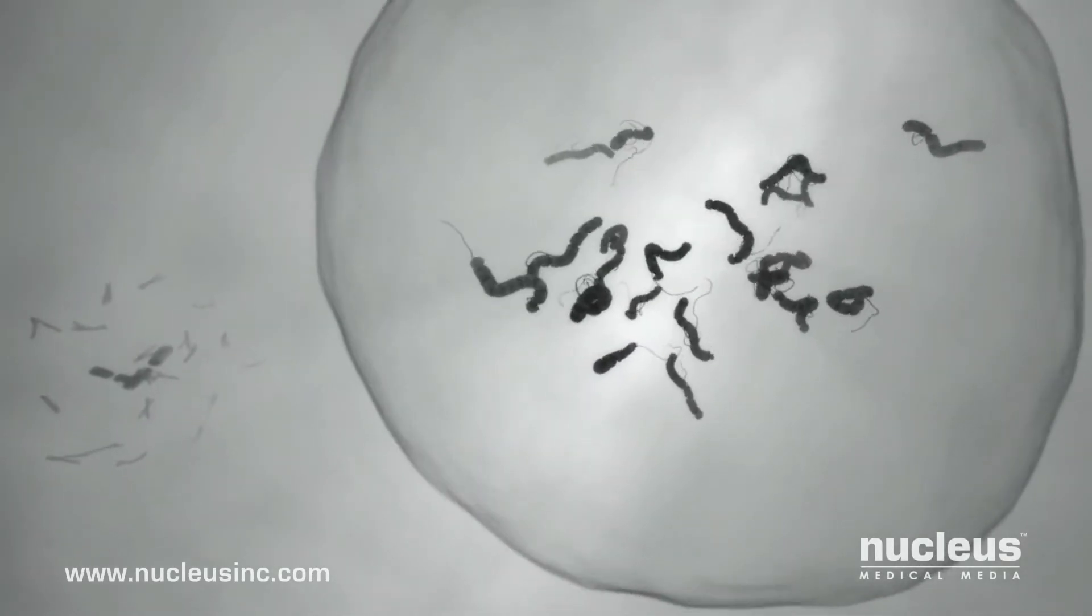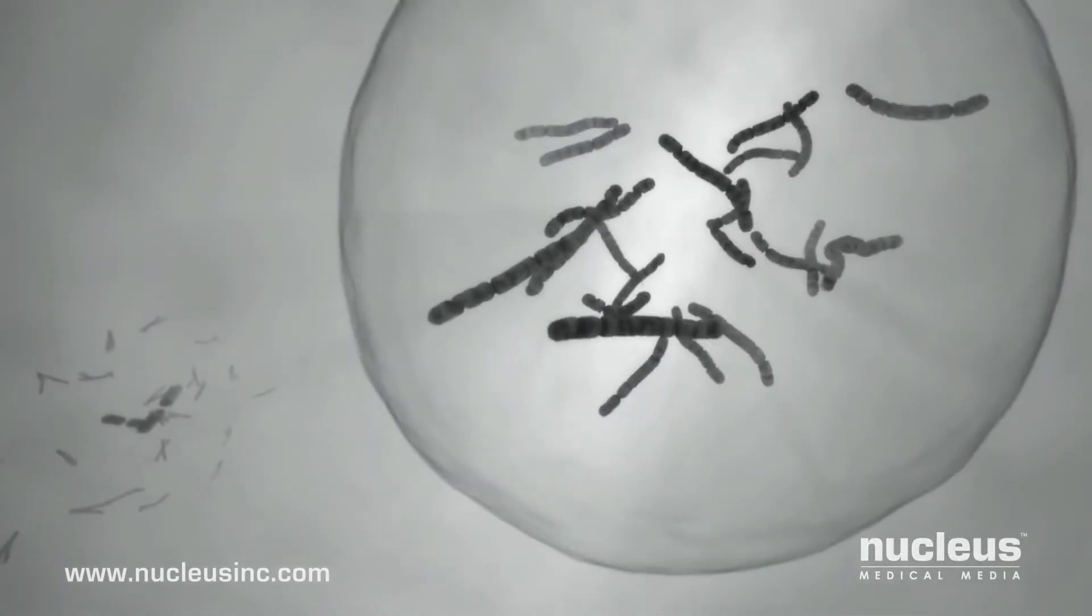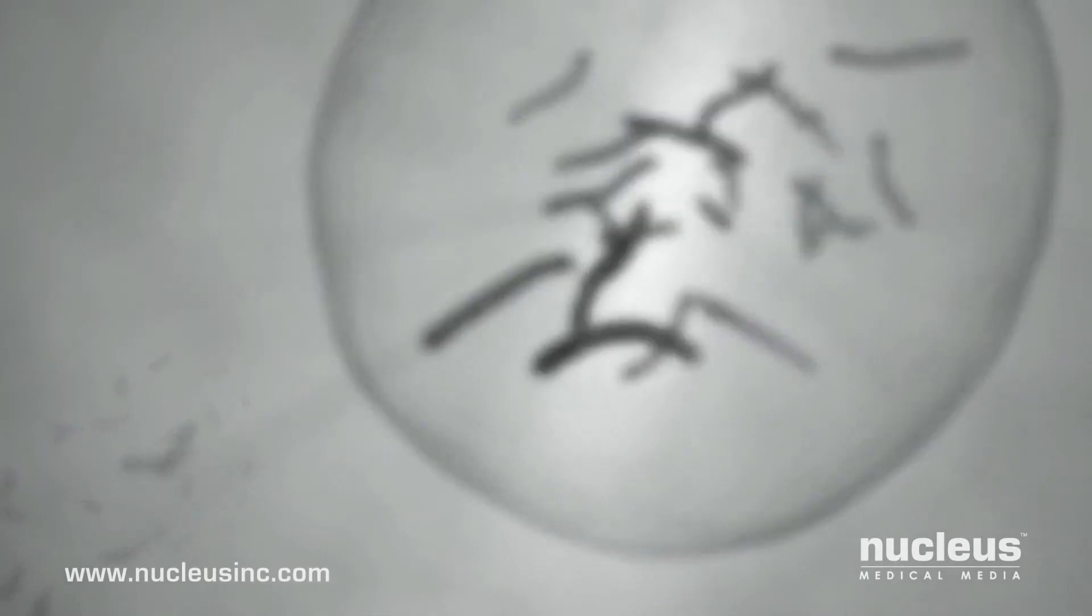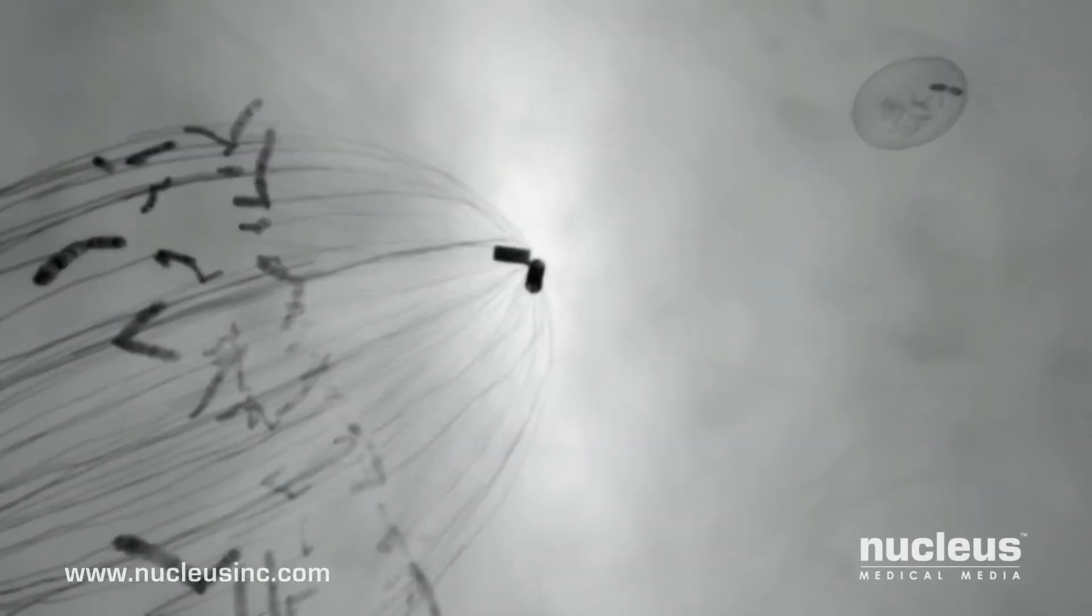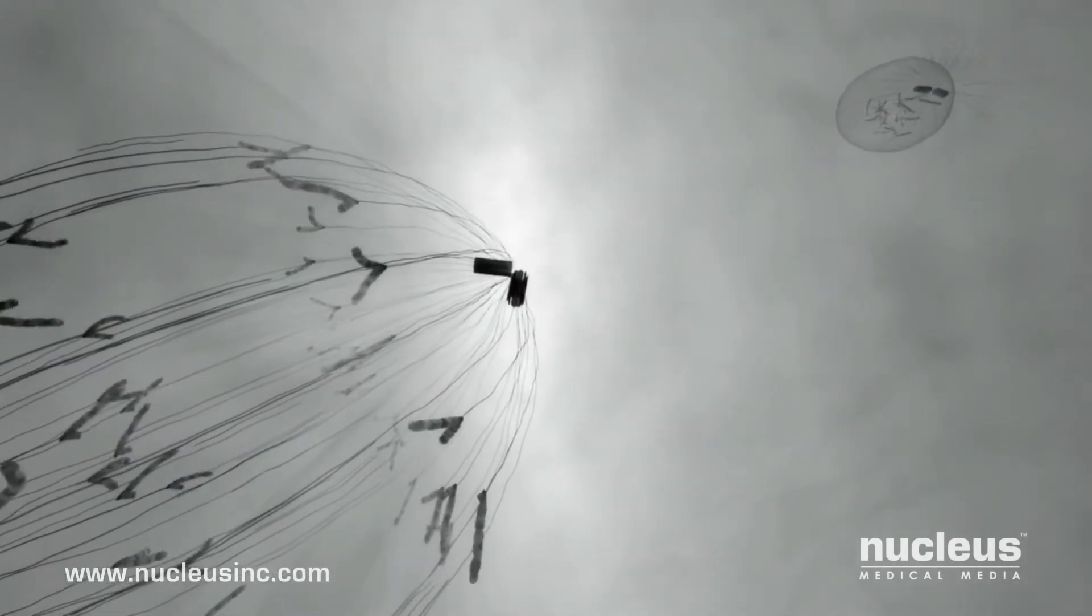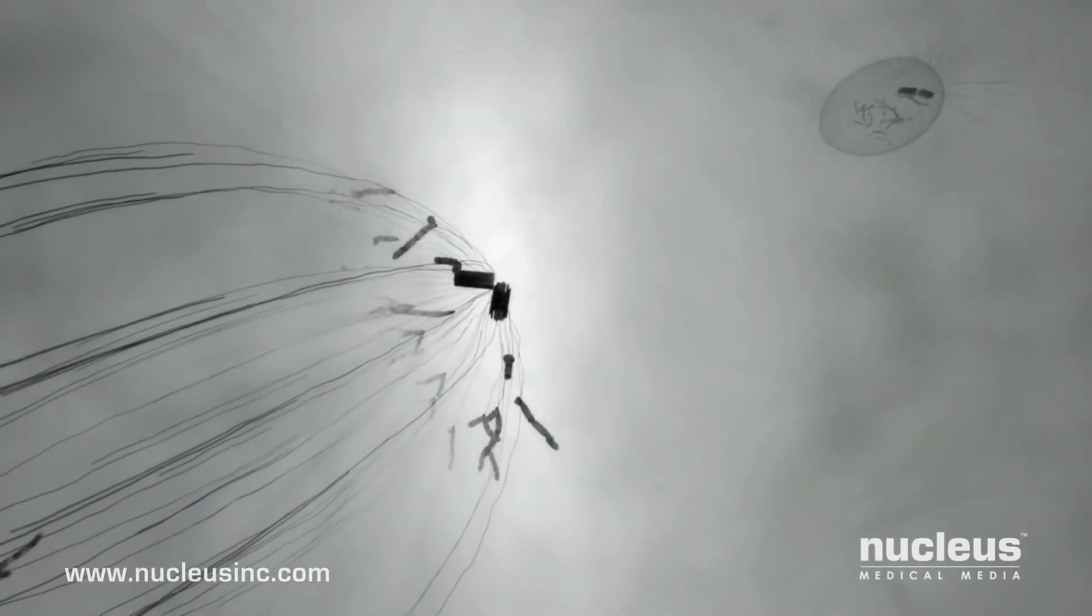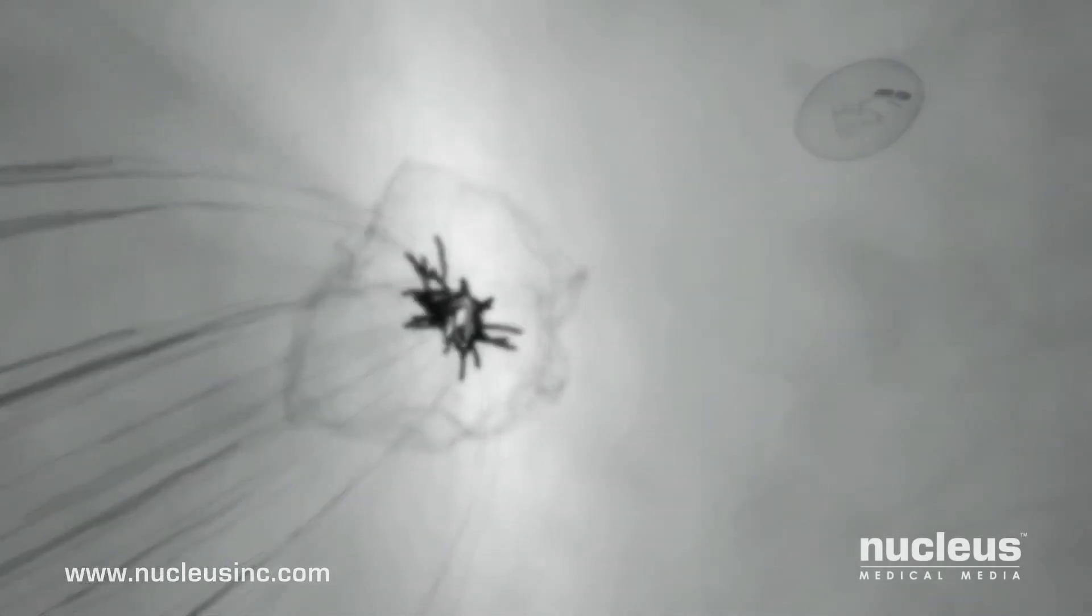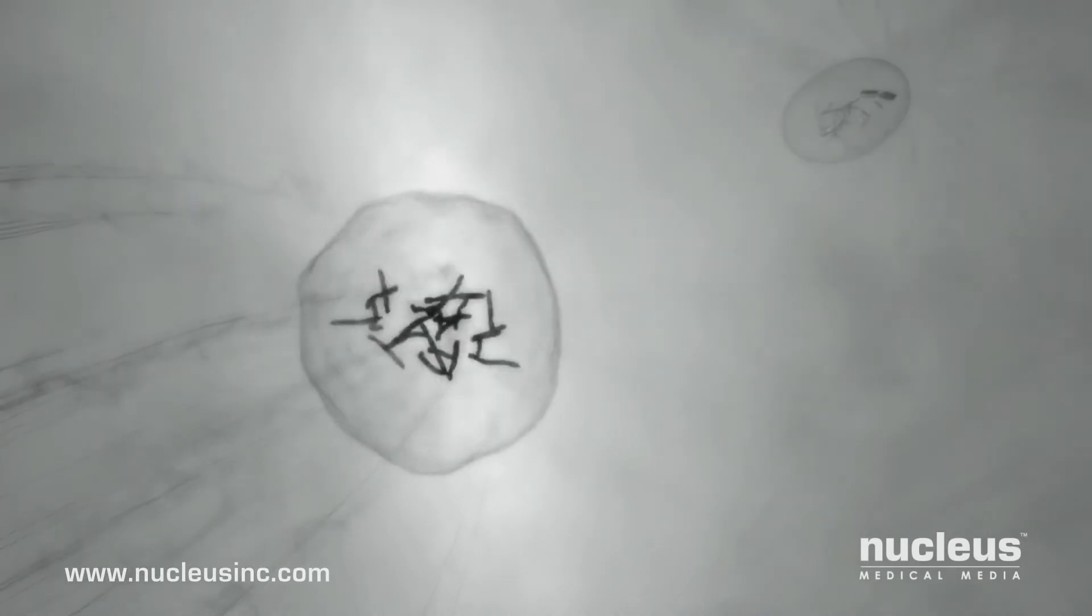Inside, the genetic material reforms into 23 chromosomes. The female genetic material, awakened by the fusion of the sperm with the egg, finishes dividing, resulting in the female pronucleus, which also contains 23 chromosomes.